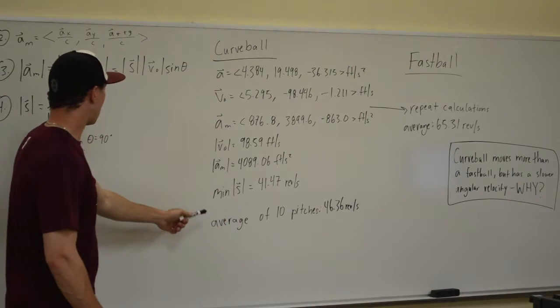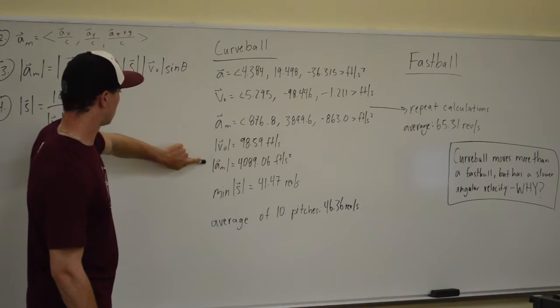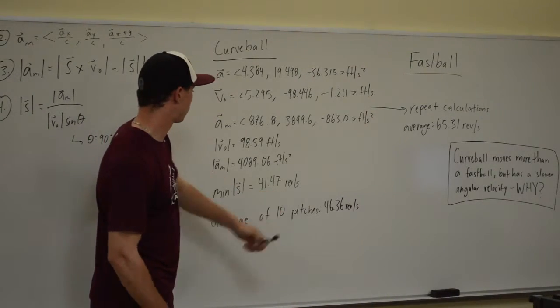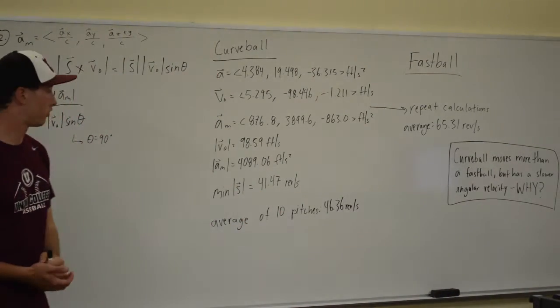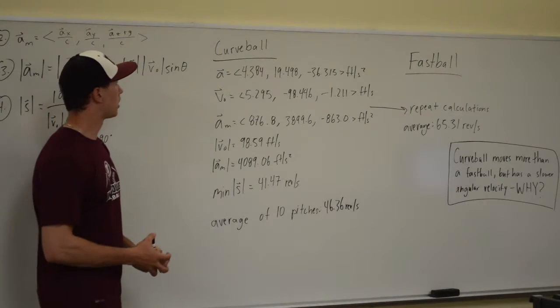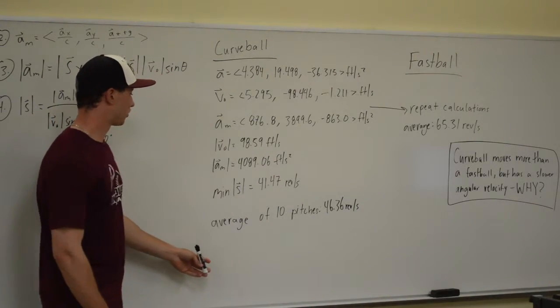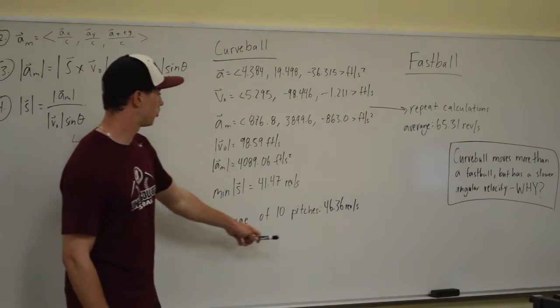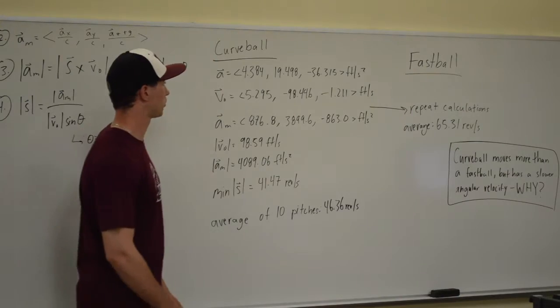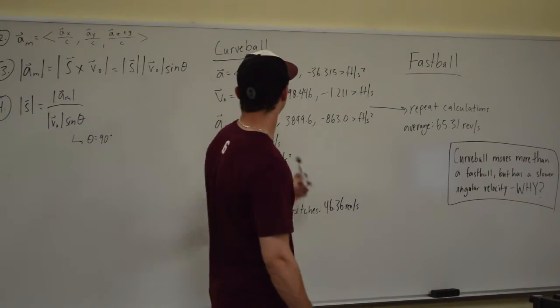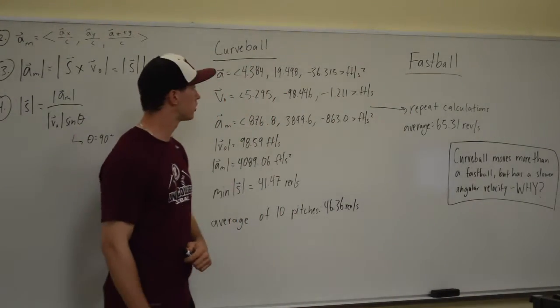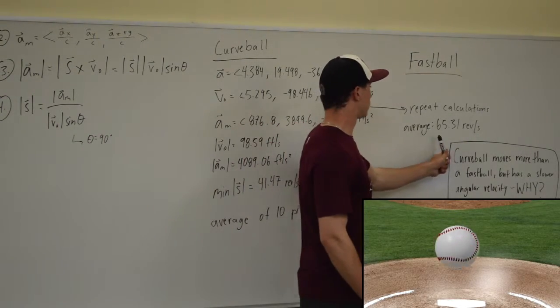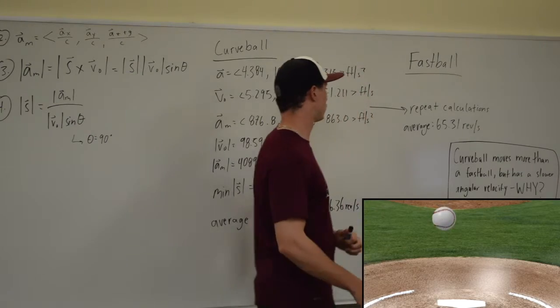We took the magnitude of the initial velocity vector, which is this value here, and we determined the magnitude of the spin vector by dividing the acceleration over the initial velocity, which in this specific case gave us a value of 41.47 revolutions per second. This same process of calculations was taken for 10 different curveballs and produced an average of 46.36 revolutions per second for a curveball. These same calculations were copied over again for a fastball, and the average of 10 pitches came out to be 65.31 revolutions per second.